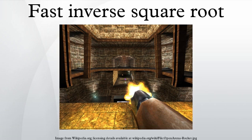The fast inverse square root, known by the hexadecimal constant 0x5f3759df, is a method of calculating the inverse square root — that is, x to the power of negative one-half — for a 32-bit floating-point number in IEEE 754 floating-point format. The algorithm was probably developed at Silicon Graphics in the early 1990s, and an implementation appeared in 1999 in the Quake 3 Arena source code, but the method did not appear on public forums such as Usenet until 2002 or 2003.